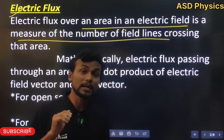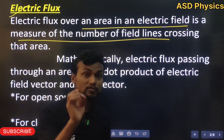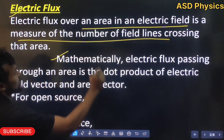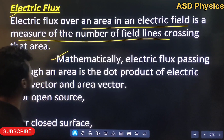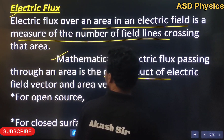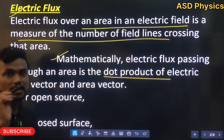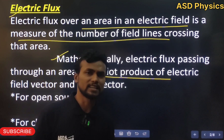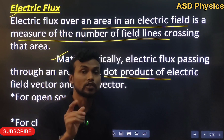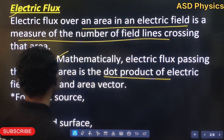If field lines are parallel to the surface and not crossing it, then the electric flux will be zero. Mathematically, electric flux passing through an area is the dot product of the electric field vector and the area vector. As we know, area is normally scalar, but for electric flux, area is a vector quantity because the orientation of the area also matters.